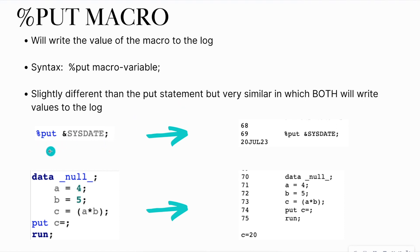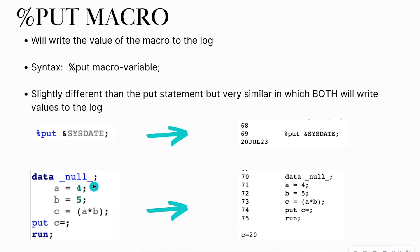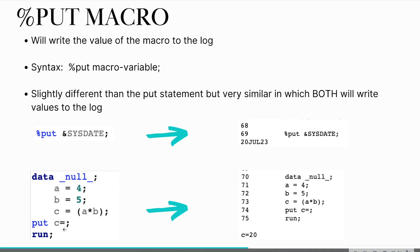Look at this example. This percent put macro — I know it's a macro because it has the percent sign — I'm telling it to put the macro sysdate, which is a global built-in macro, into the log. When I view my log, it gives me the 20th of July 2023. Whereas the put statement down here, I'm creating a data set that I don't want to save to my work library. The underscore null underscore is a temporary data set that's not being saved. I'm assigning a value to a, a value to b, and I want to put the value of c to the log — which is just those two values multiplied together — so when I view the log, I see c equals 20.